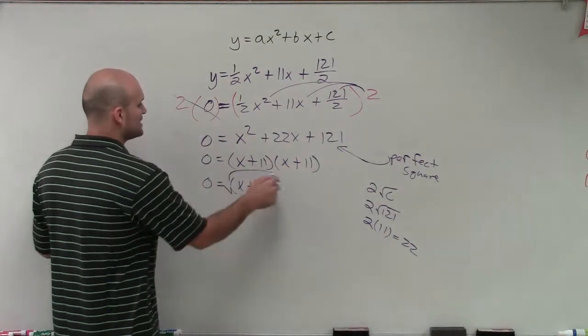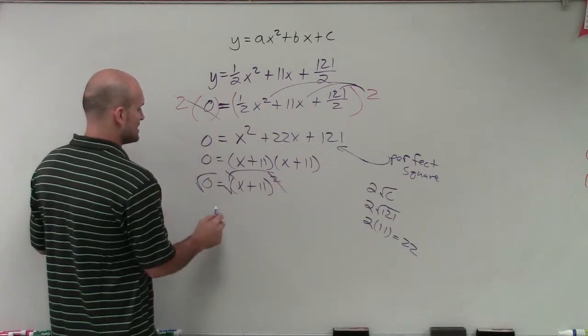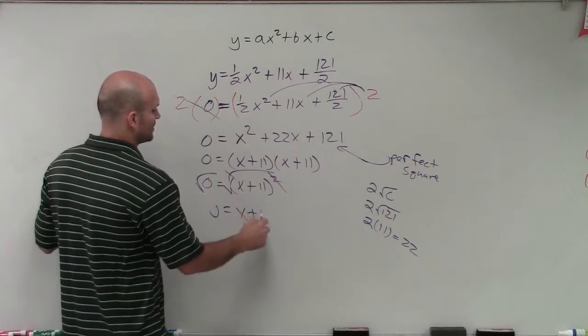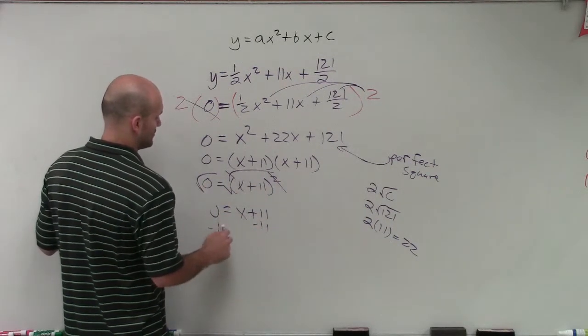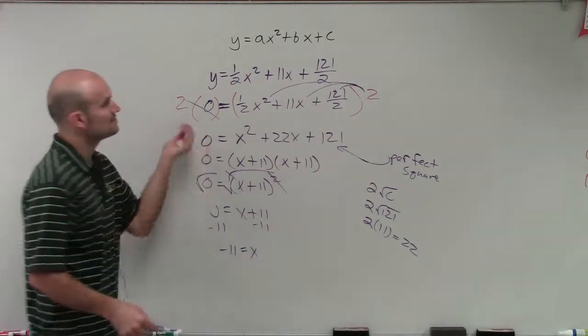And then use my inverse operations on both sides. So 0 equals x plus 11. Subtract 11 on both sides. Negative 11 equals x. So there you go.